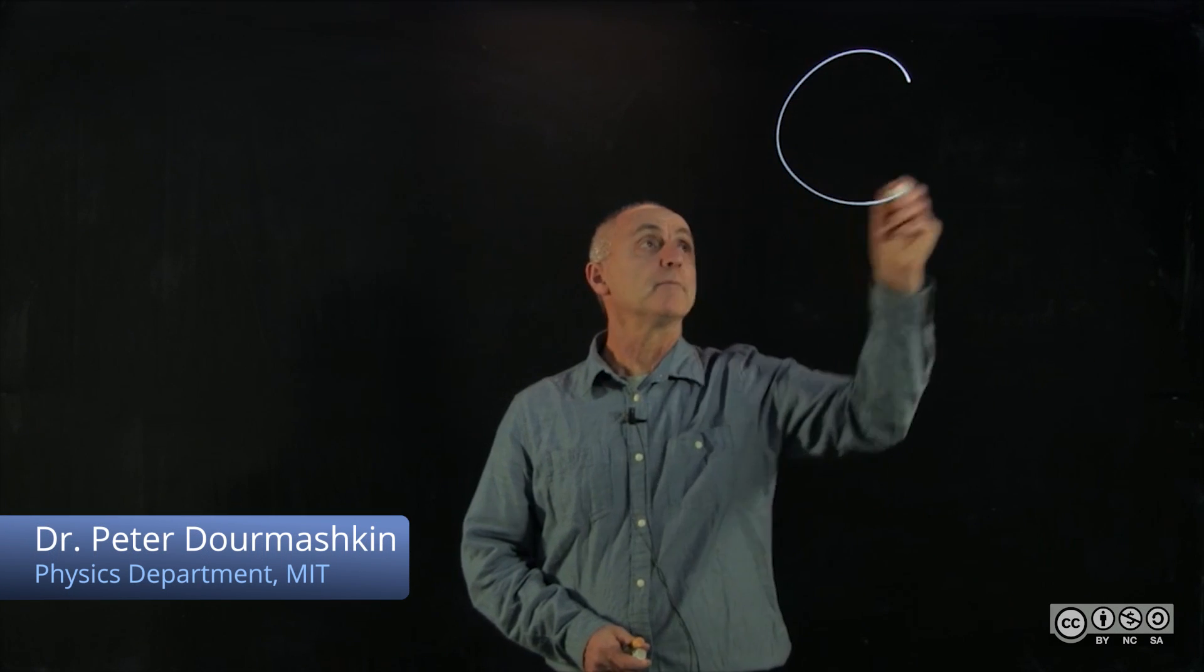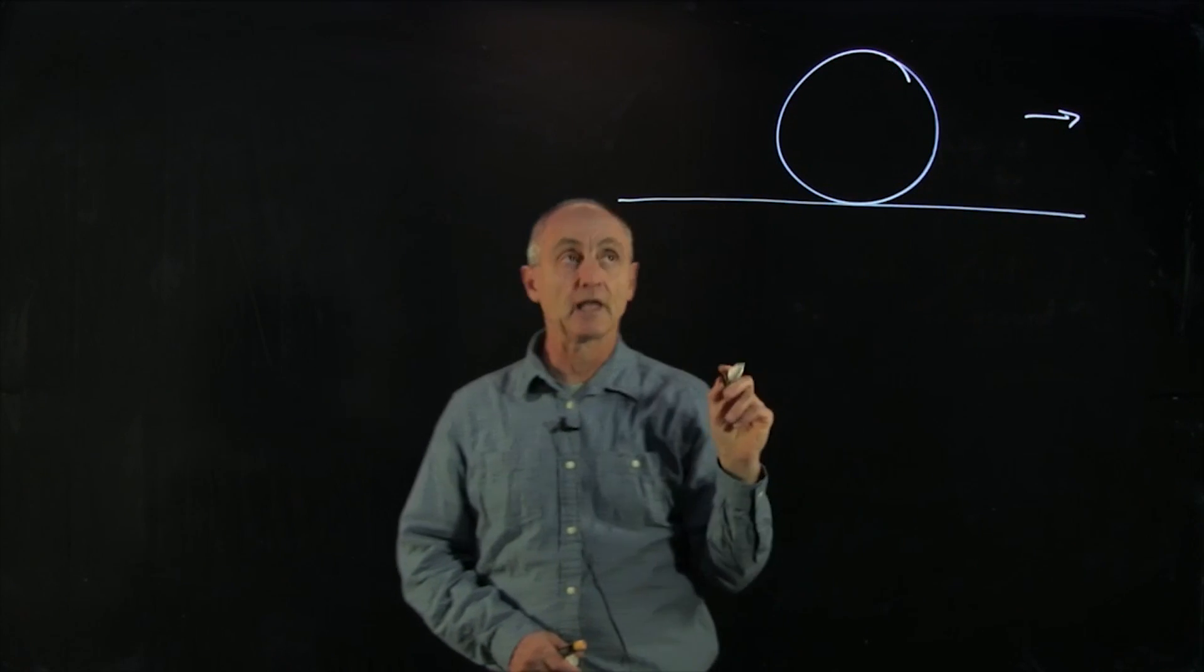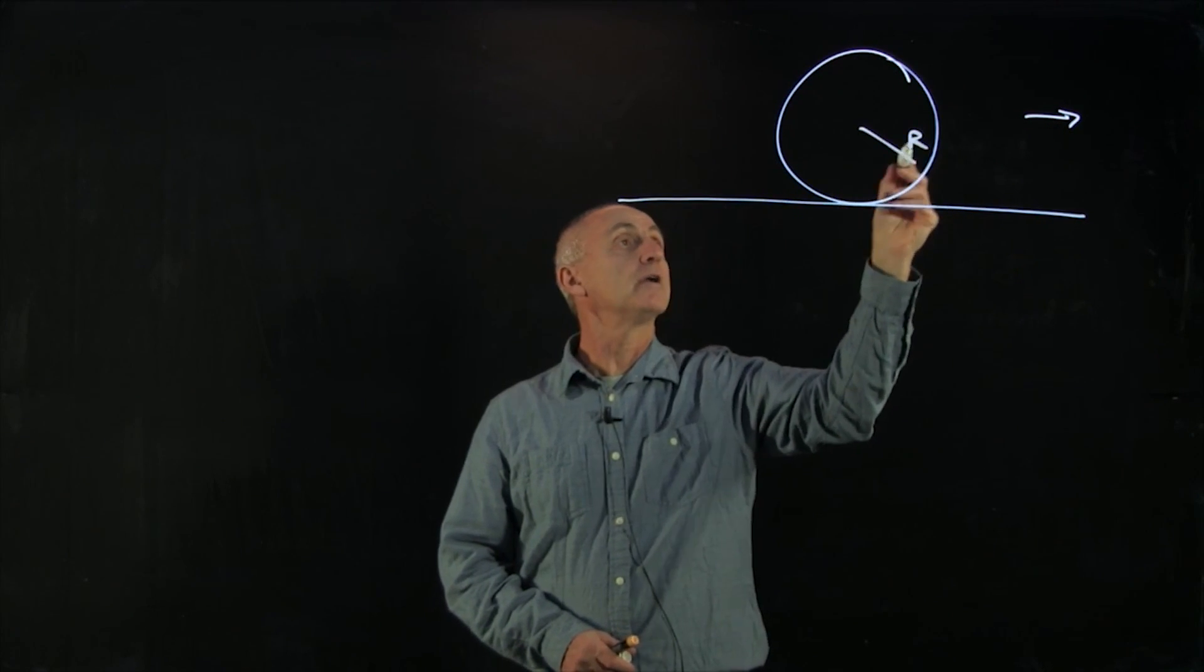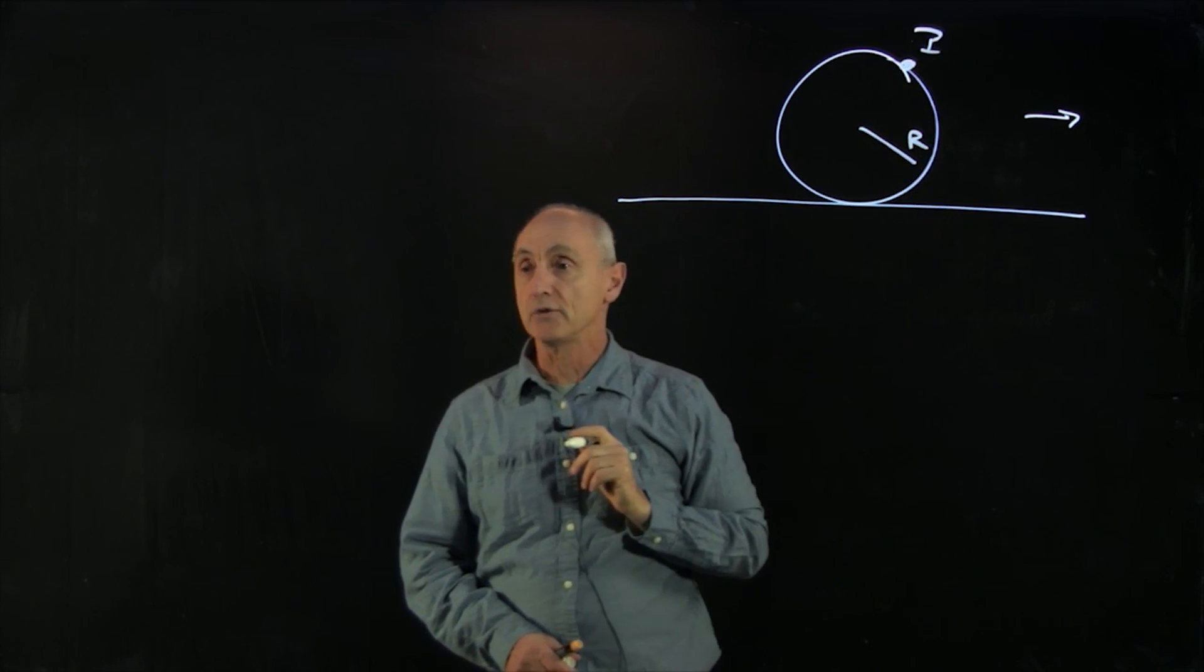Let's consider a wheel that's rolling along the surface. The wheel has radius r, and I want to consider the motion of a point P on the rim of the wheel.